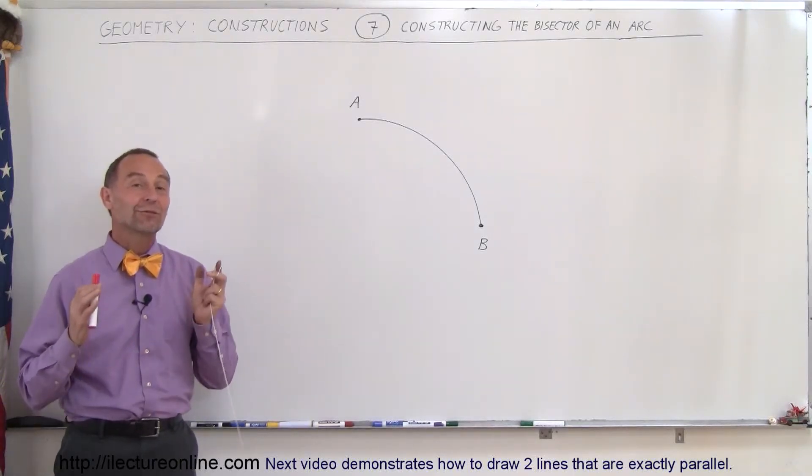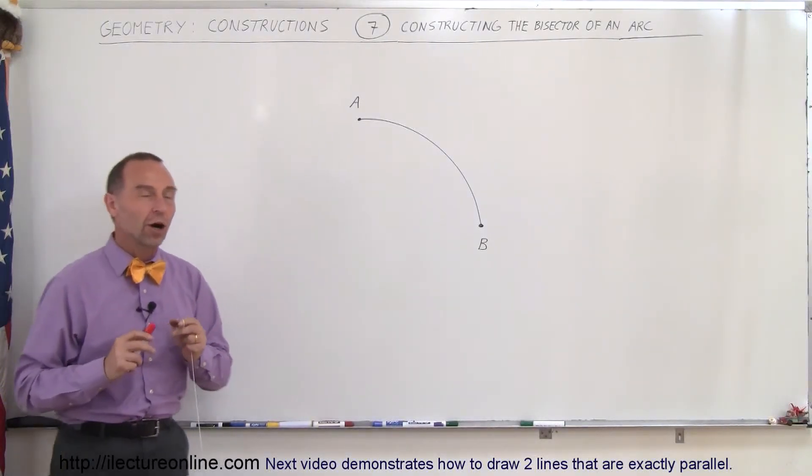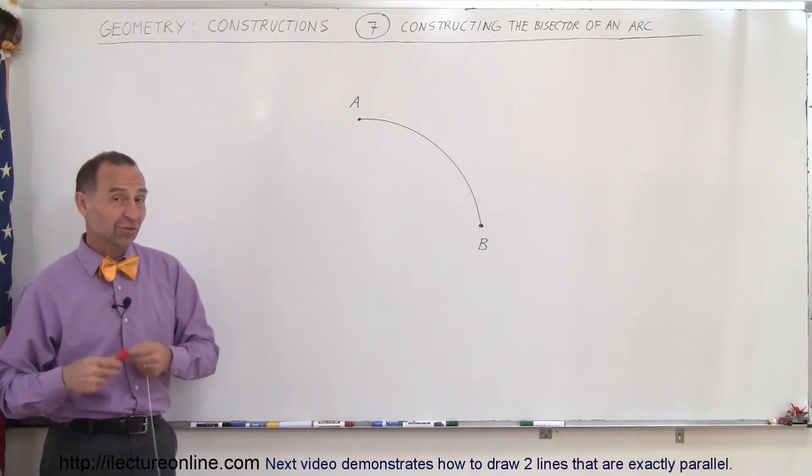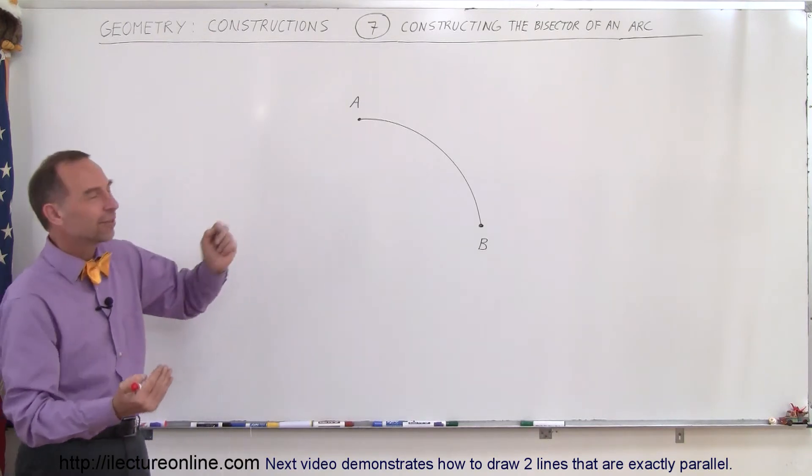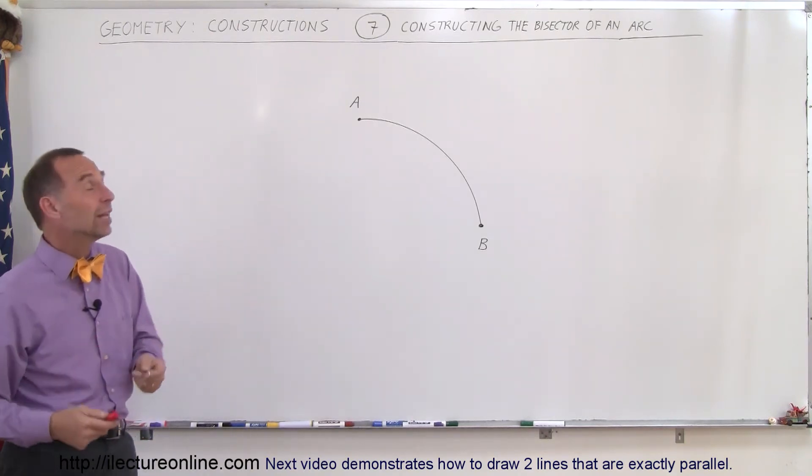Welcome to iLecture Online and now we're going to find the bisector of an arc. Actually the procedure is exactly the same as the bisector of a line segment. So there's an arc and I put it kind of on the side so you can see that it works in any which way.